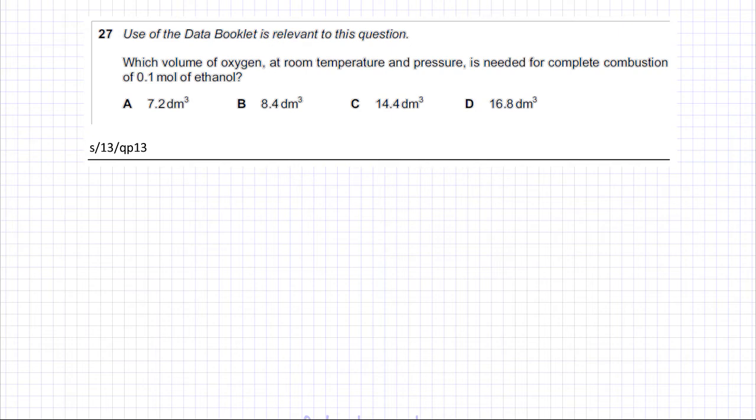So the first thing you need to do is have a balanced equation for the combustion of ethanol. Ethanol is C2H5OH, you burn it with oxygen O2 and it produces CO2 and H2O, and you need to balance this equation.